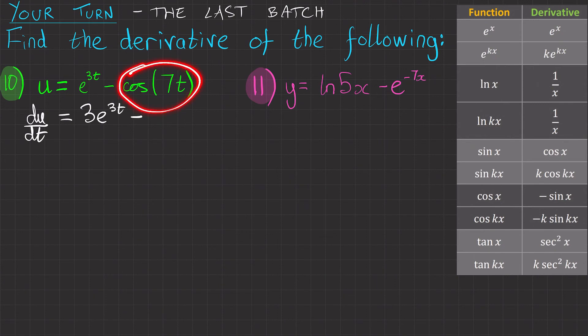And we're looking for the derivative of cos 7t. So we've got cos kx. The derivative is minus k sin kx. So we'll have minus 7 sin 7t.